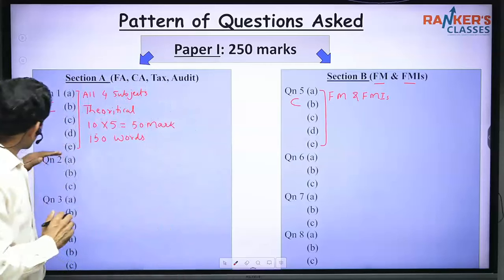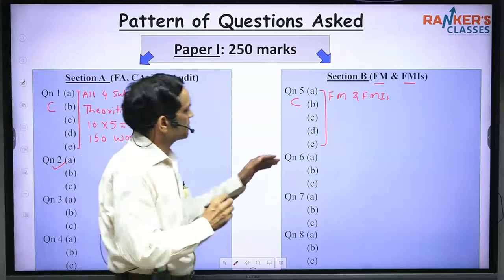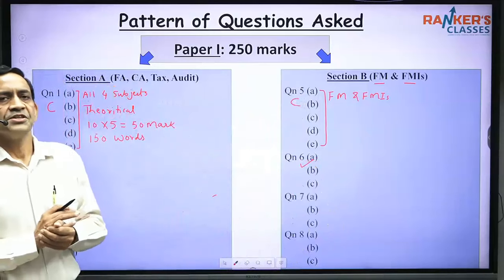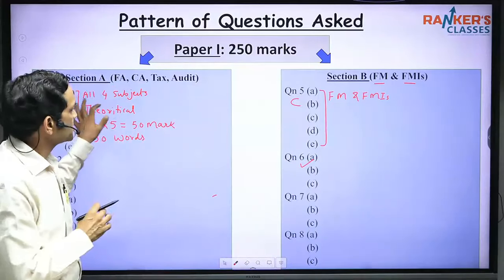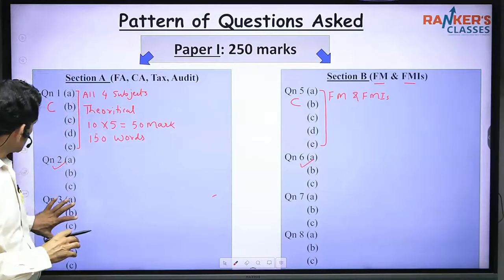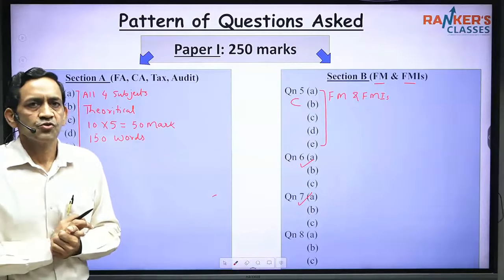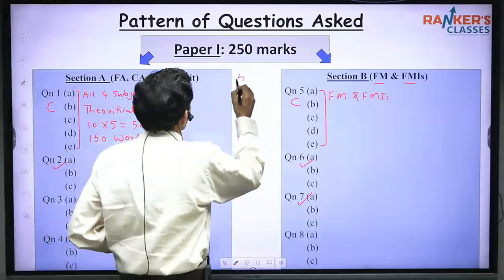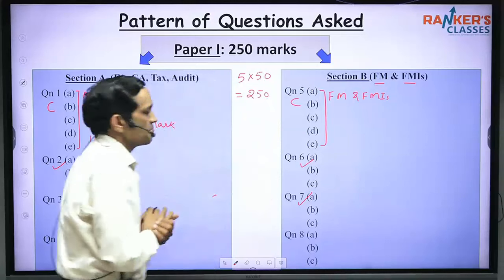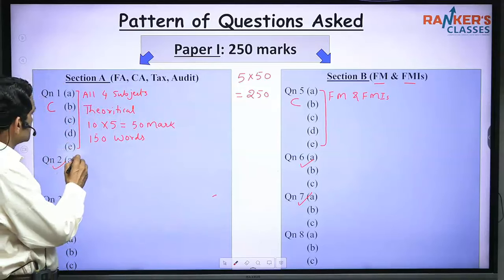Question number 1 and question number 5 are compulsory. Out of questions 2, 3, and 4, you have to select at least one, and out of questions 6, 7, and 8 you have to select at least one. In this manner you have four questions — two compulsory and two choice-based — and the fifth question can be selected from either section. So five questions multiplied by 50 marks each gives 250 marks in Paper 1.